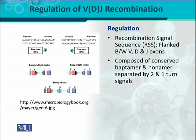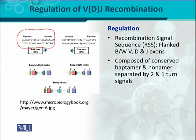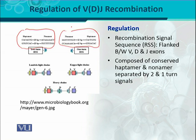Here you can see in this figure: there are the V region, J region, and C region. These are composed of conserved base pairs — heptamers means seven base pairs, and nonamers means nine base pairs. These heptamers and nonamers constitute the Recombination Signal Sequences (RSS). The separation between them is by the two-turn and one-turn signals, where two-turn corresponds to 23 base pairs and one-turn corresponds to 12 base pairs.